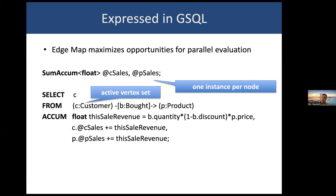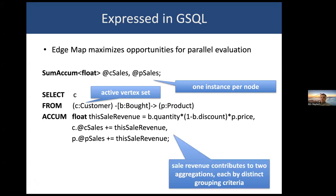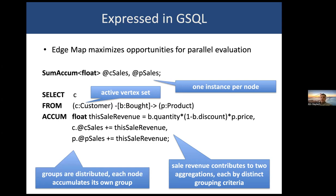One thing to note is that in this particular case the active vertex set is implicit — the compiler realizes we're talking about all the customer vertices. Another thing to observe is that in this style of aggregation, one can compute two different aggregations by different criteria — one by customer, the other by product — in a single pass over the same data. Finally, the groups are distributed: they reside in the accumulators at the vertices, where every vertex corresponds to a group key, so we're computing many groups in parallel distributed over the graph.